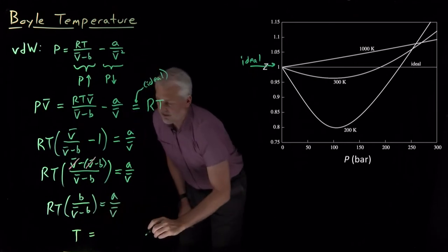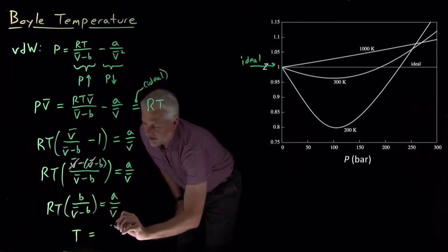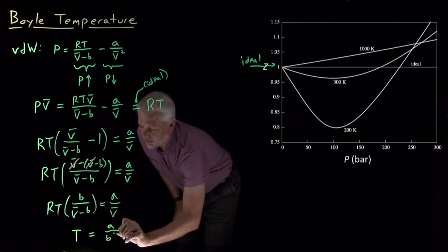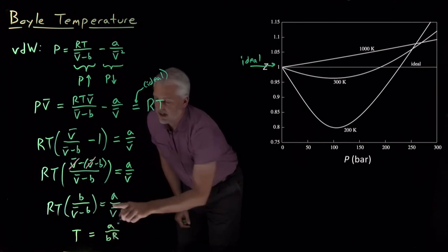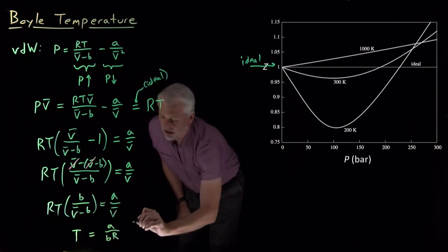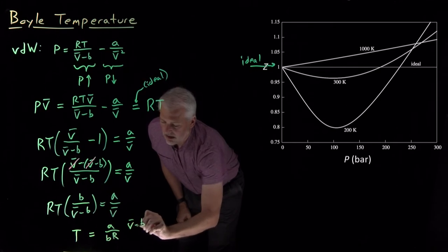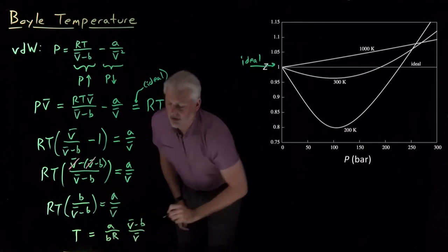So leaving the T on the left, all we have, if we move everything over to the right, is I have an A. I'll bring the B and the R over to the right-hand side and put them in the denominator. And the volume terms look like this.